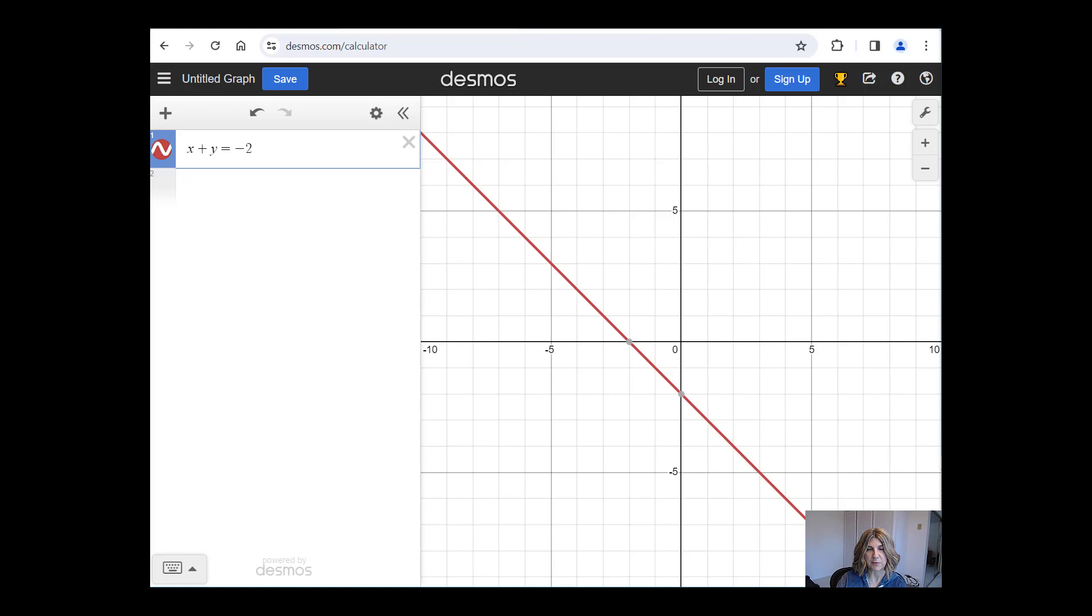And if we would like to solve the system of x plus y equals minus 2, and a second equation x minus y equals 4, I can simply put the second equation in the second box, and boom, Desmos solves it for us.